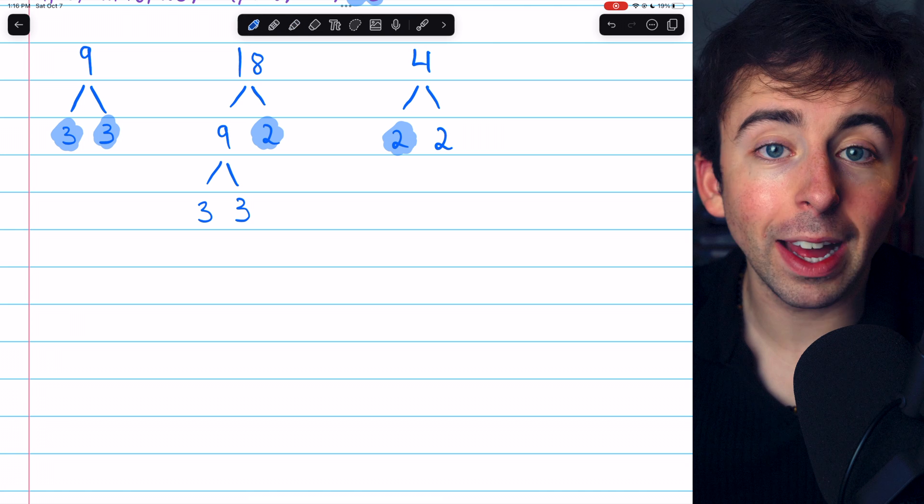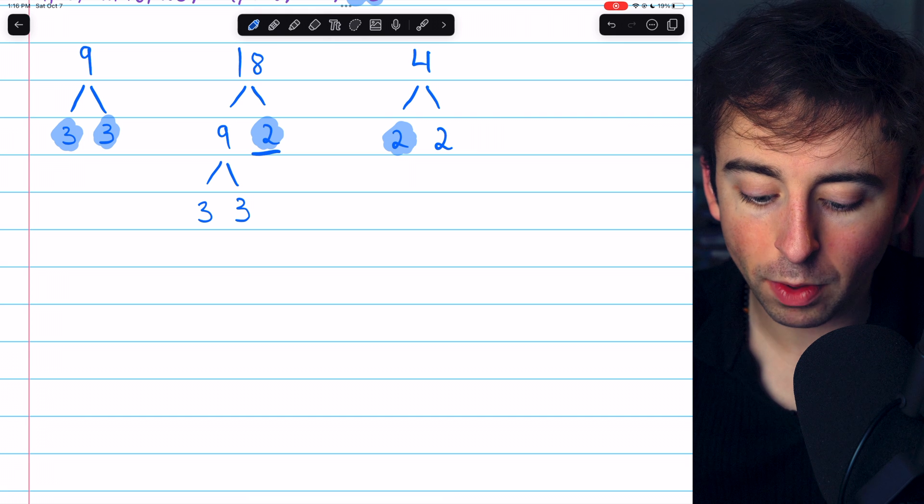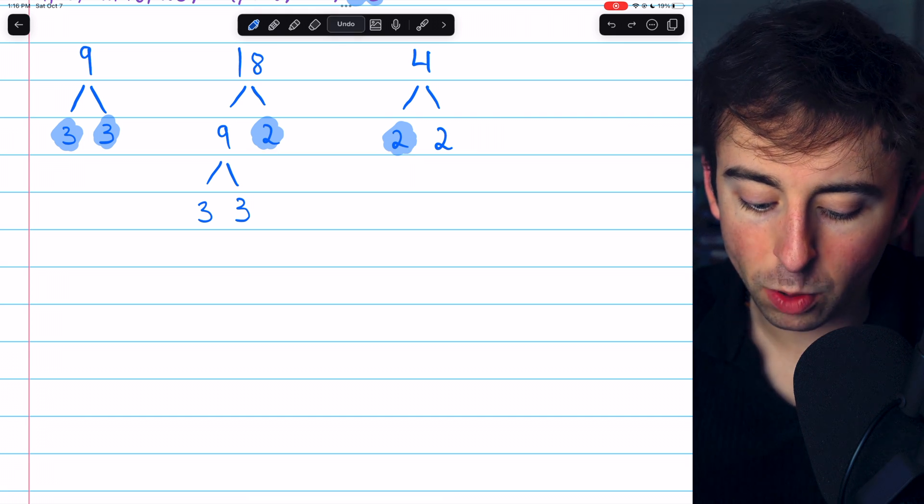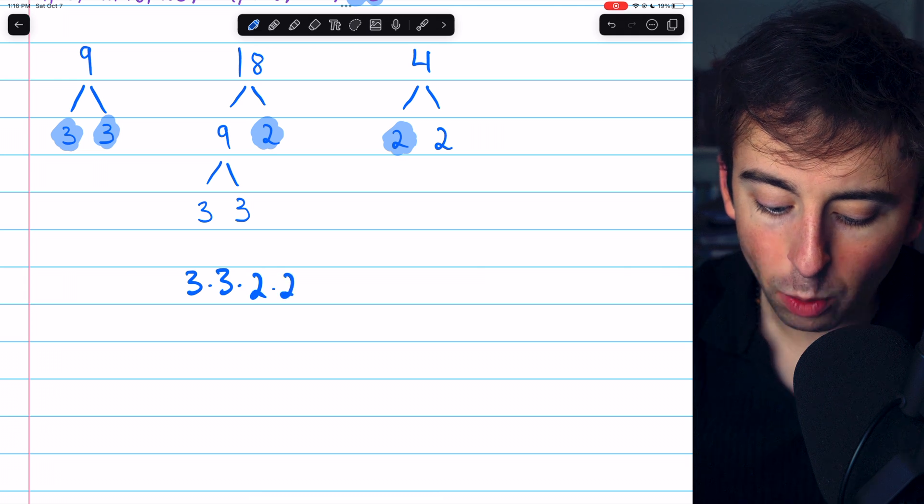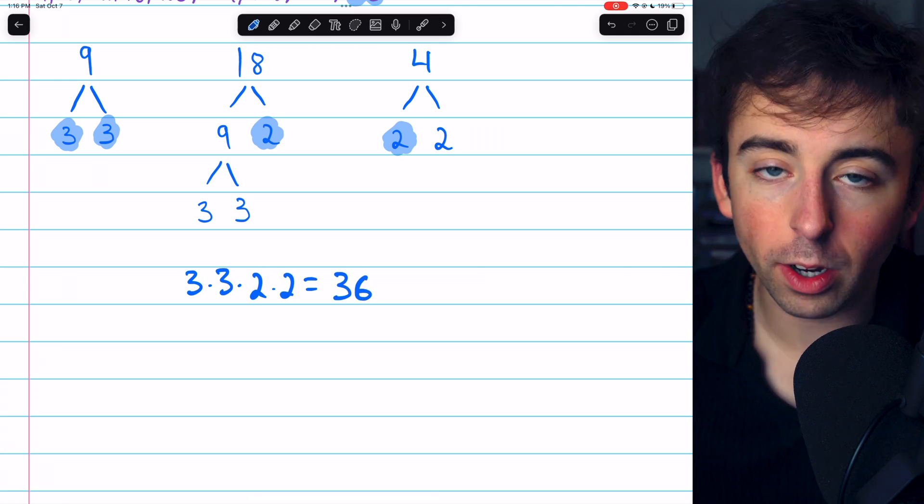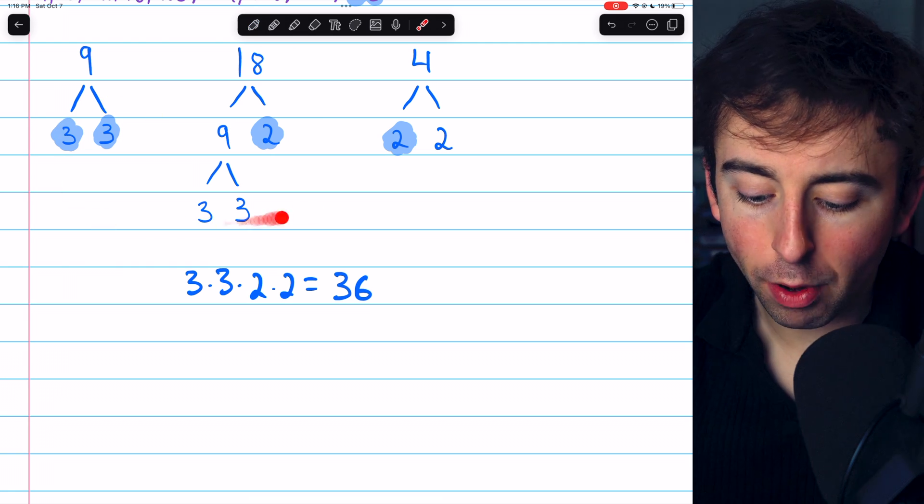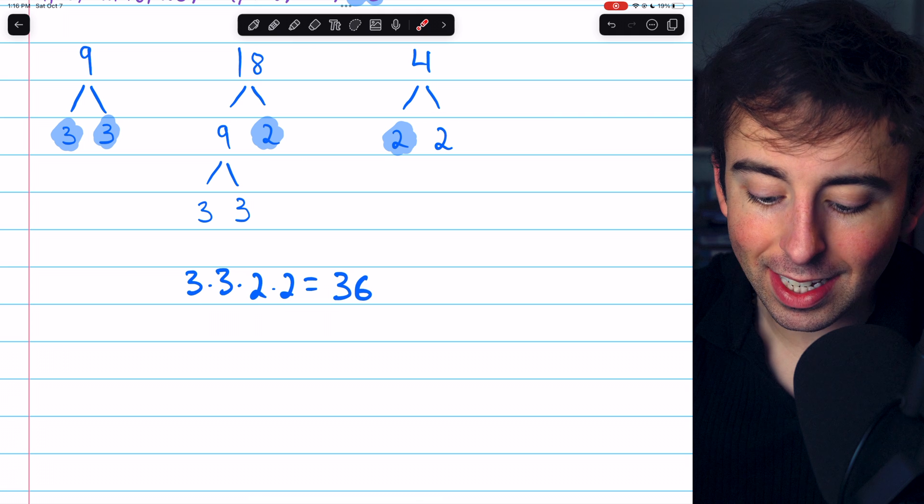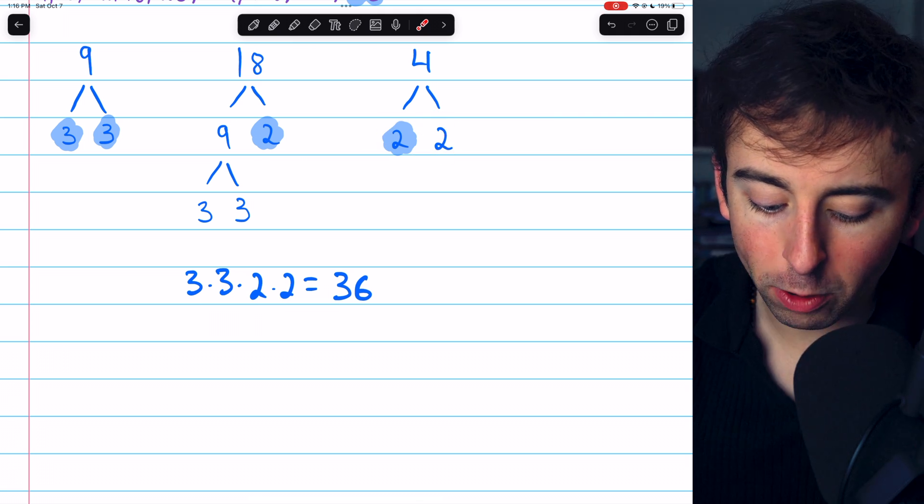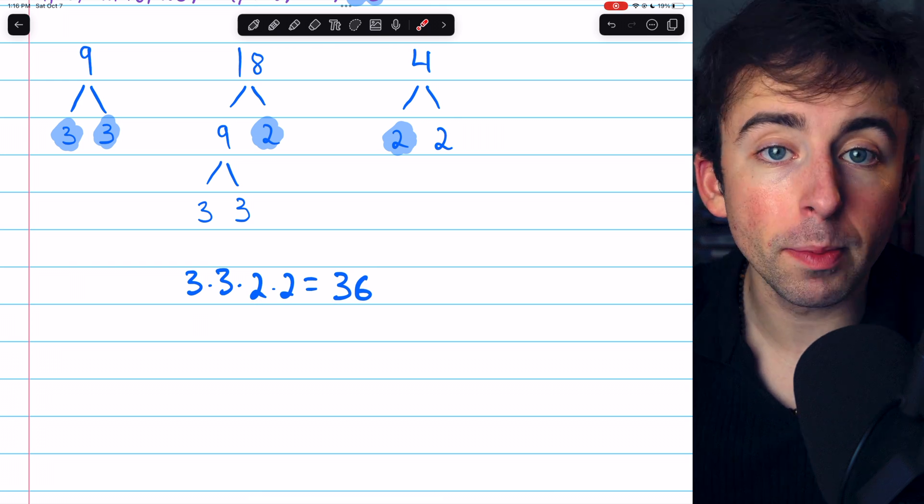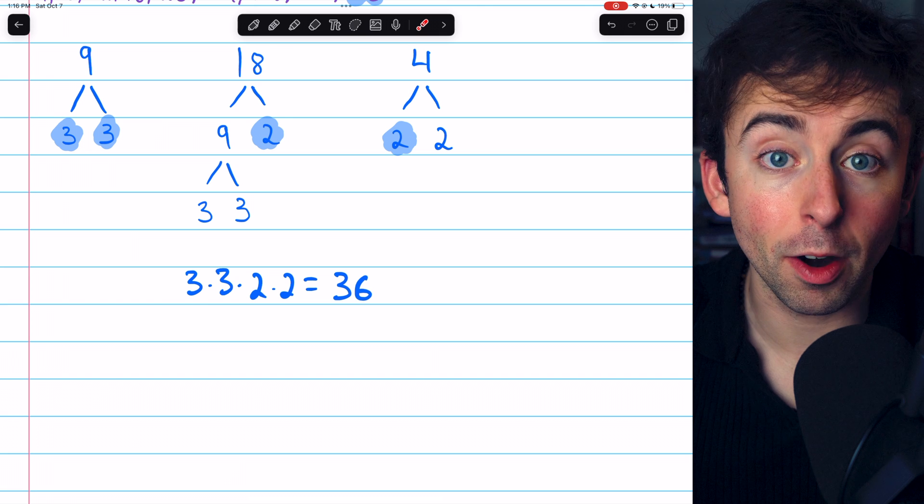Then multiply all of these factors together. 3 times 3, which is 9. Times 2, which is 18. Times 2, which is 36. And that is our least common multiple, which agrees with what we had before from the lists. Again, the idea behind this is that all of the prime factors are represented in the least common multiple. Since 4 has 2 factors of 2, there are 2 factors of 2 in the least common multiple. Similarly, for 18 and 9 and their prime factors.